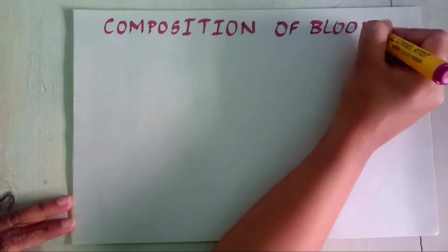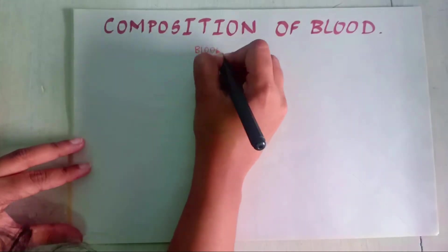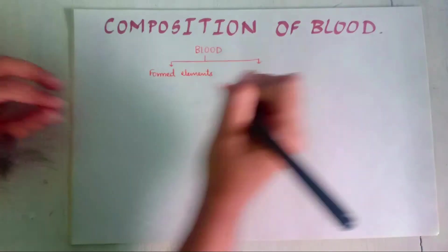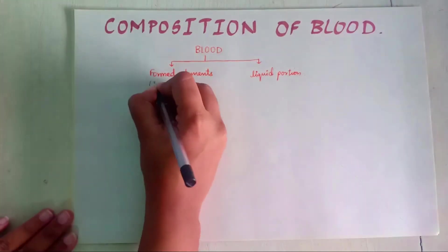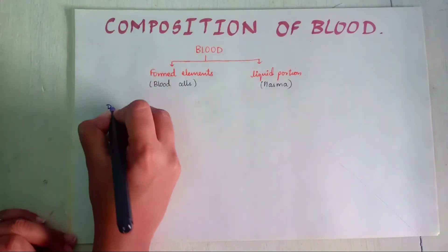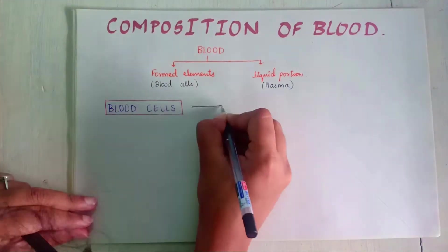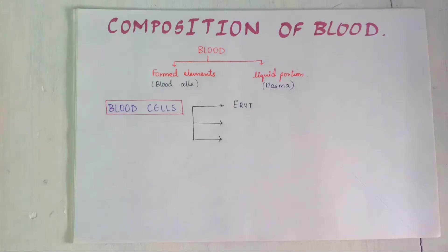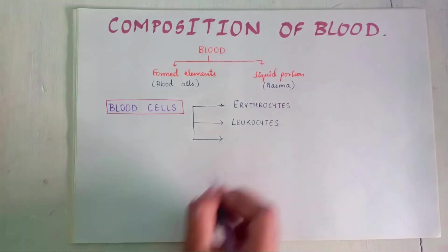Now the composition of blood. Blood contains the blood cells which are called the formed elements and the liquid portion known as plasma. Three types of cells are present in blood: Erythrocytes, leukocytes and thrombocytes.